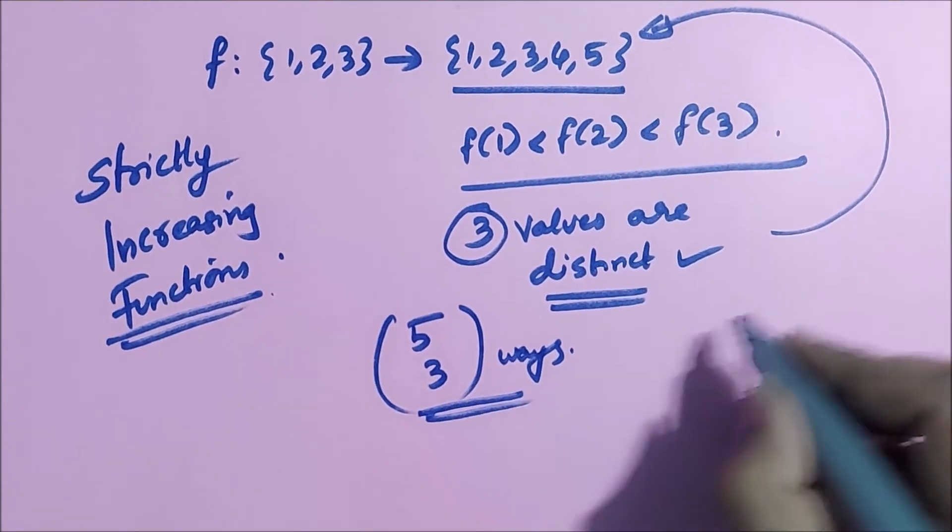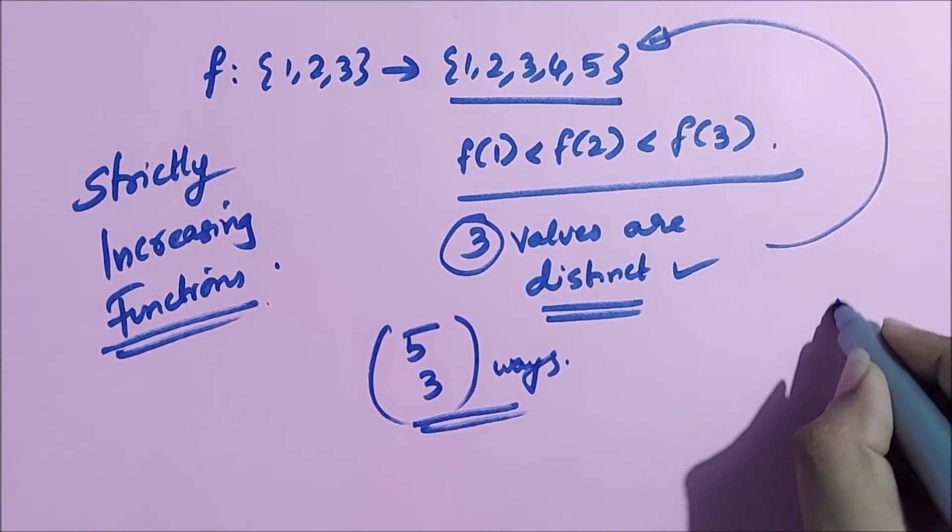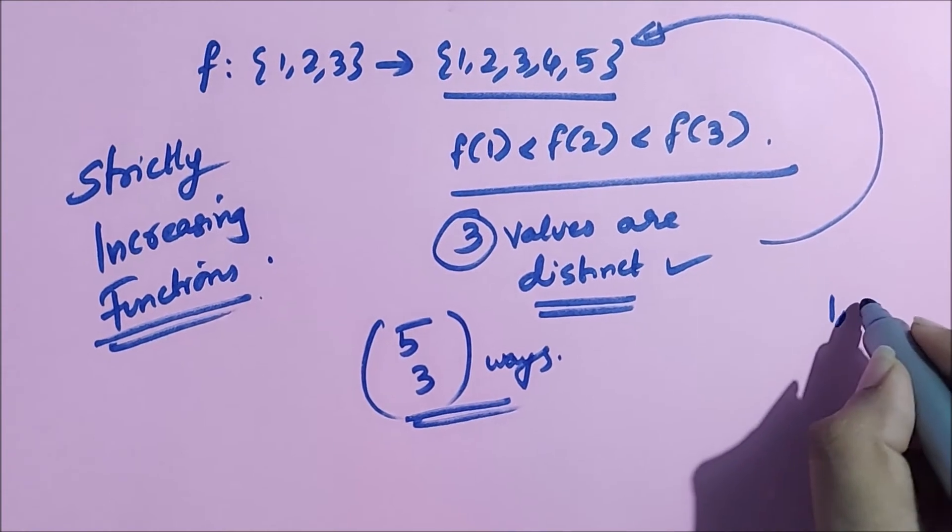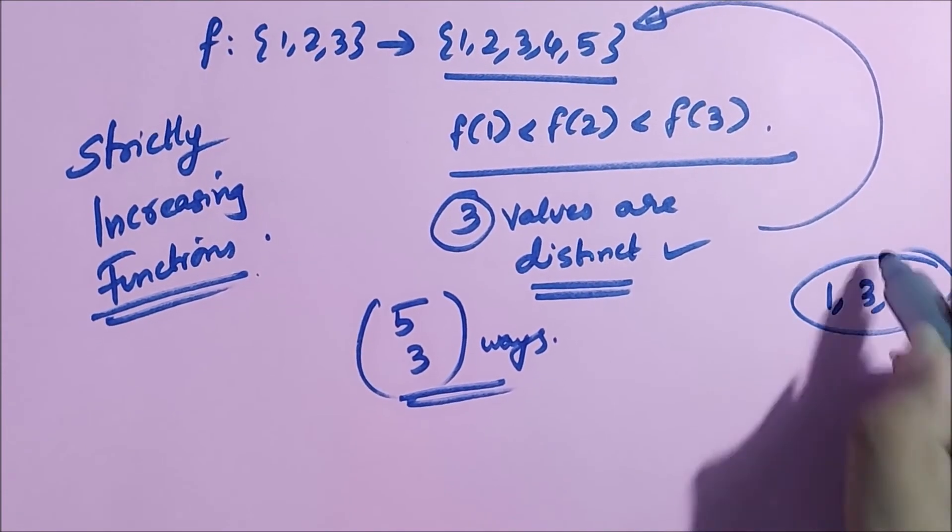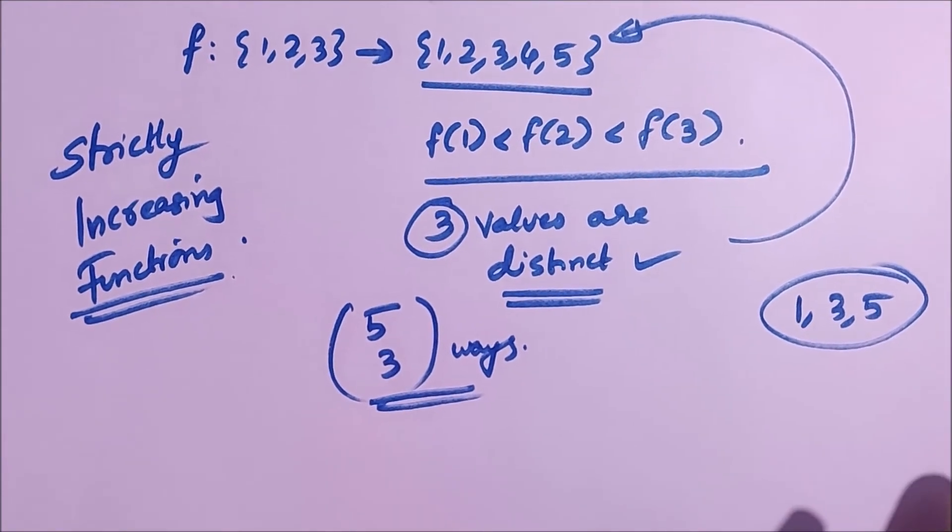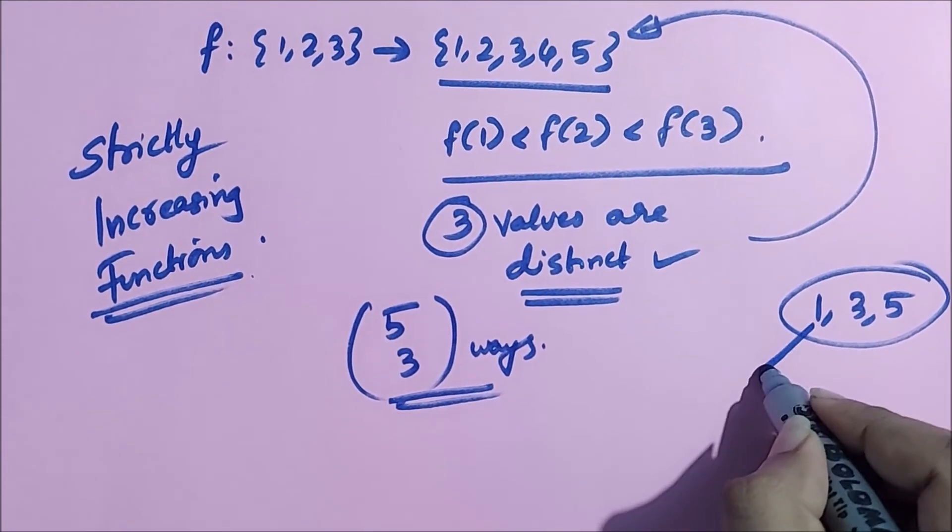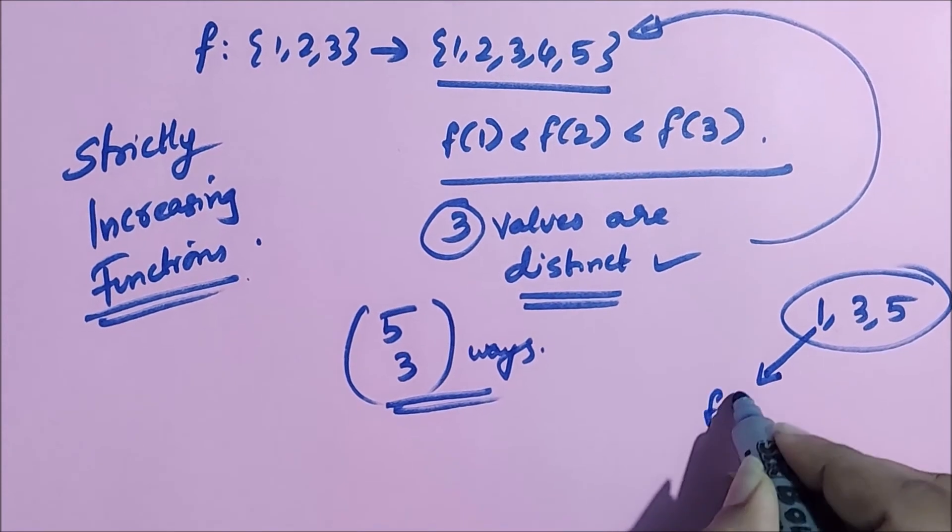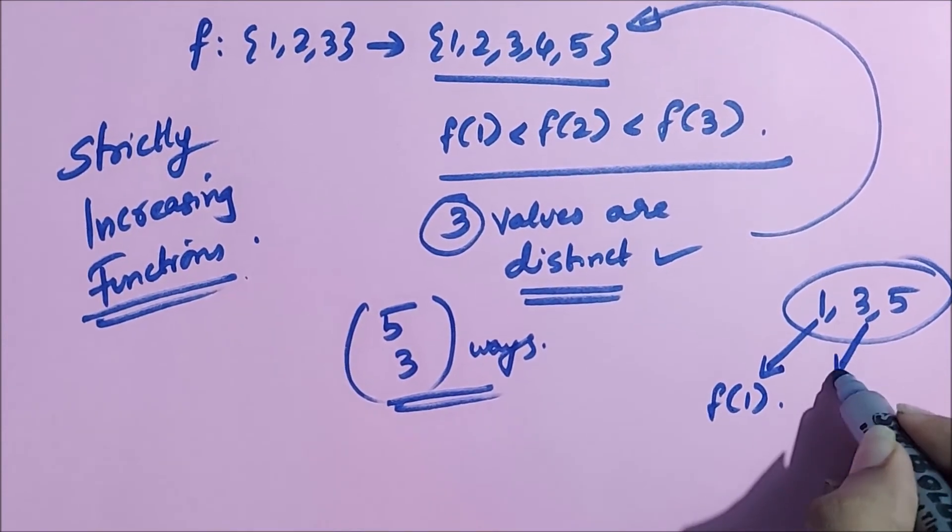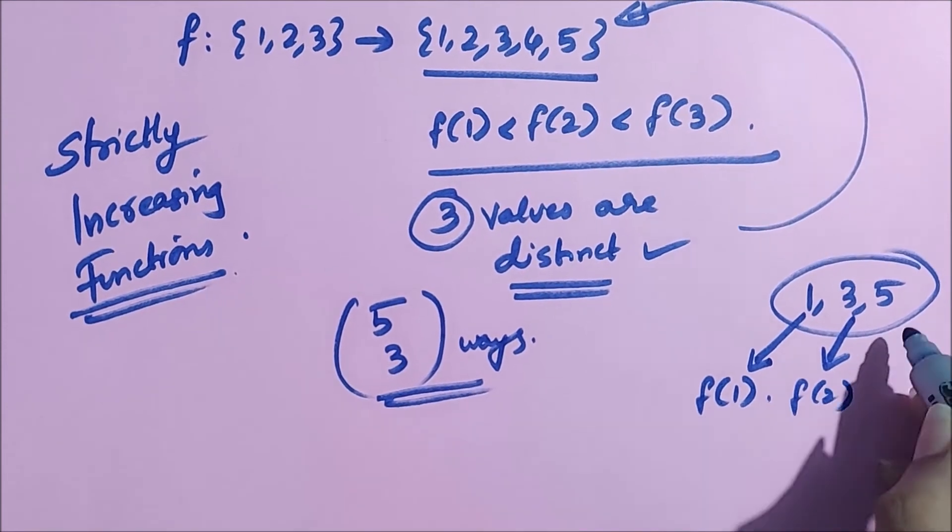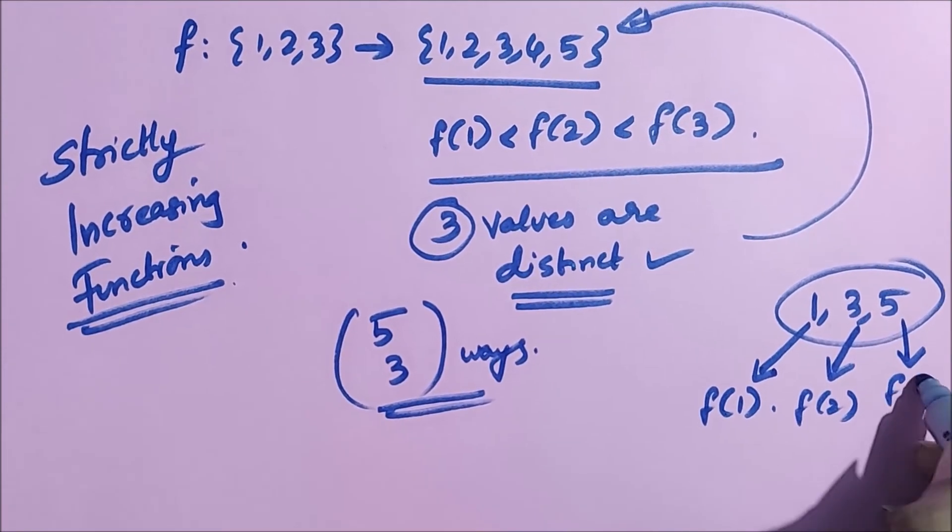So let's say the three values that we have selected are 1, 3, 5. Let's say these are the three values we selected. Once we have selected, automatically the lesser value among these three will be for f of 1, and the second lesser value will be for f of 2, and the larger value will be for f of 3.